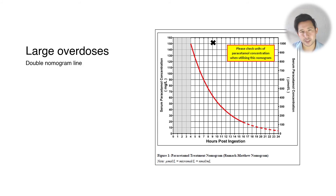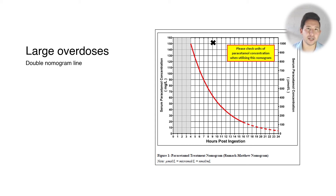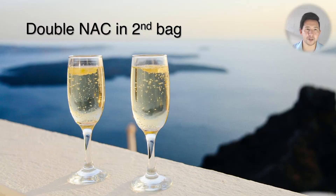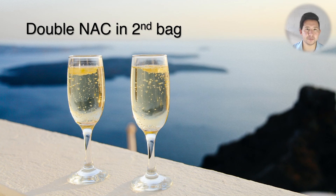The other thing to bear in mind is that you can give higher doses of NAC. For example, if your paracetamol concentration comes back more than double the line on the treatment nomogram, then you should double the strength of the NAC in the second bag in the two-bag regimen.